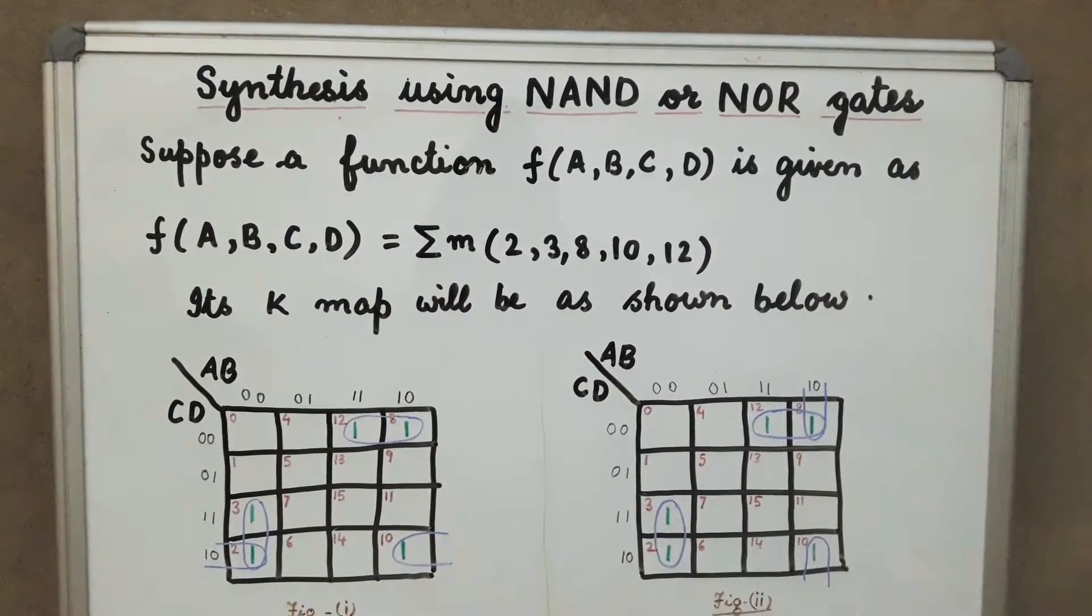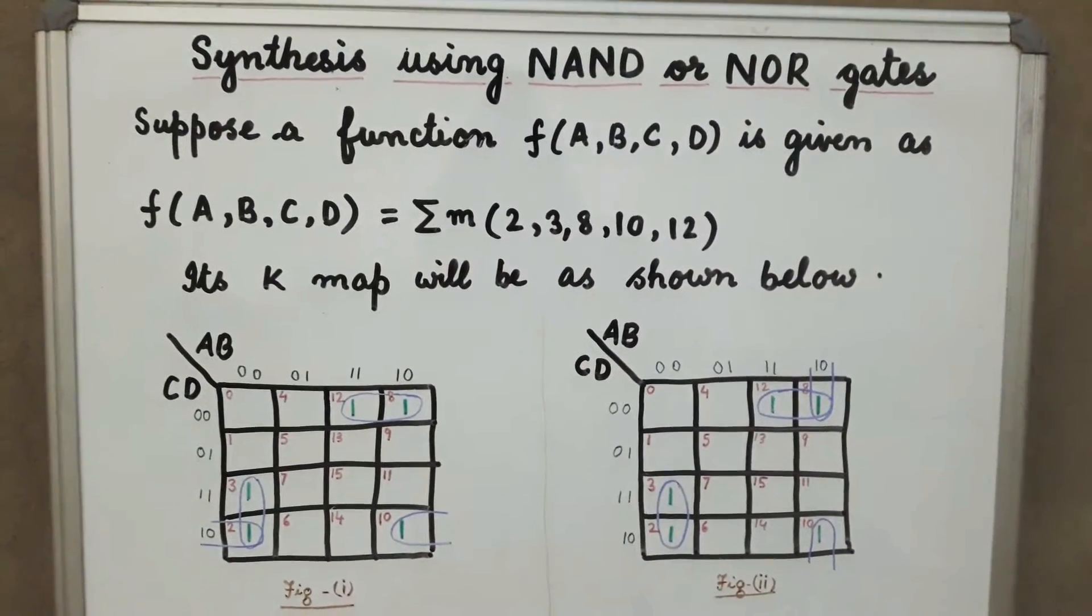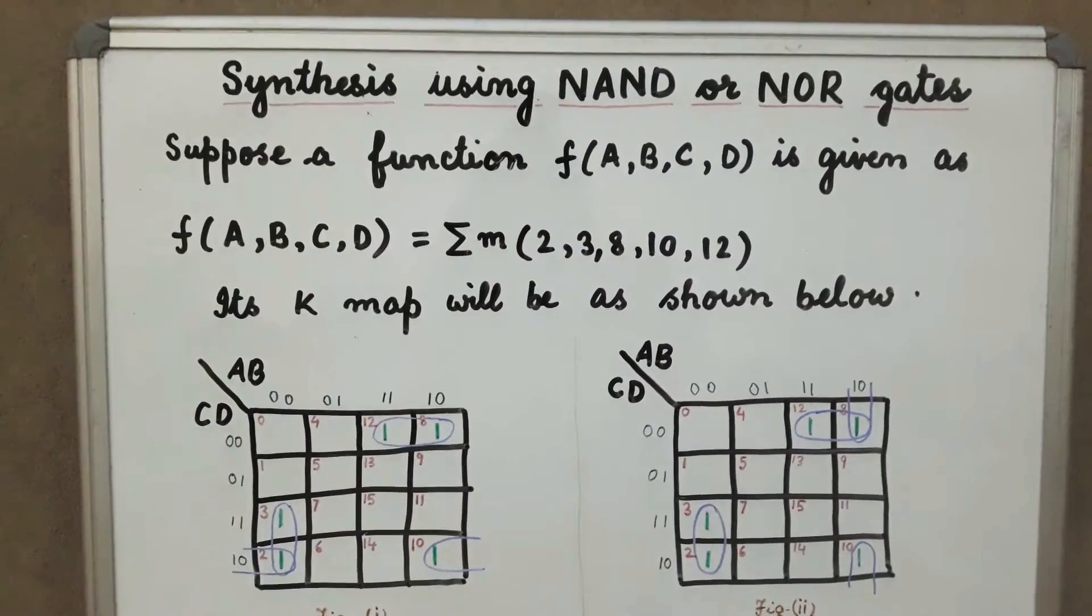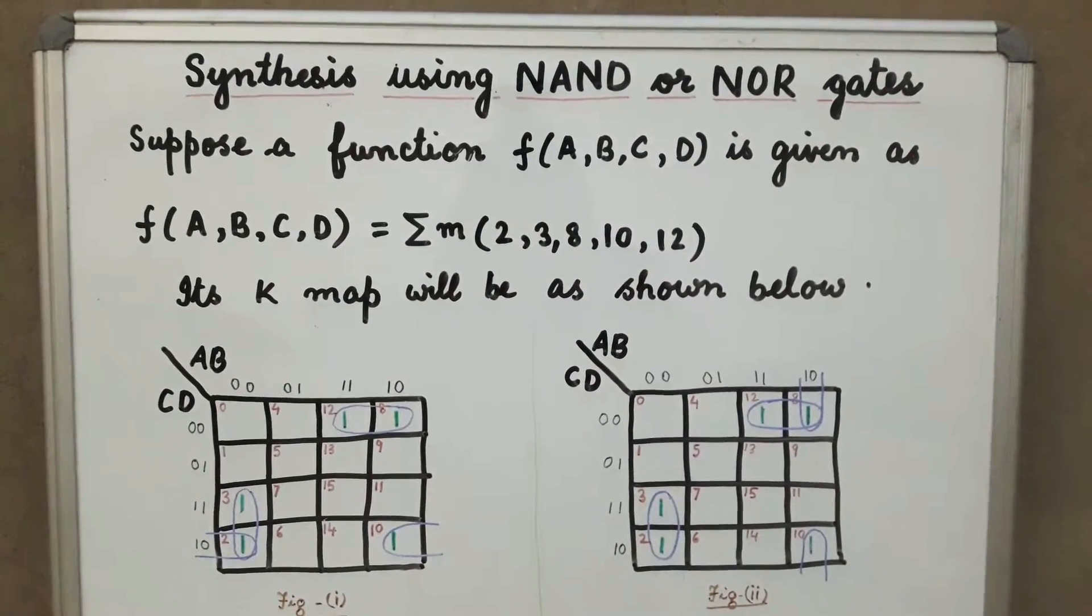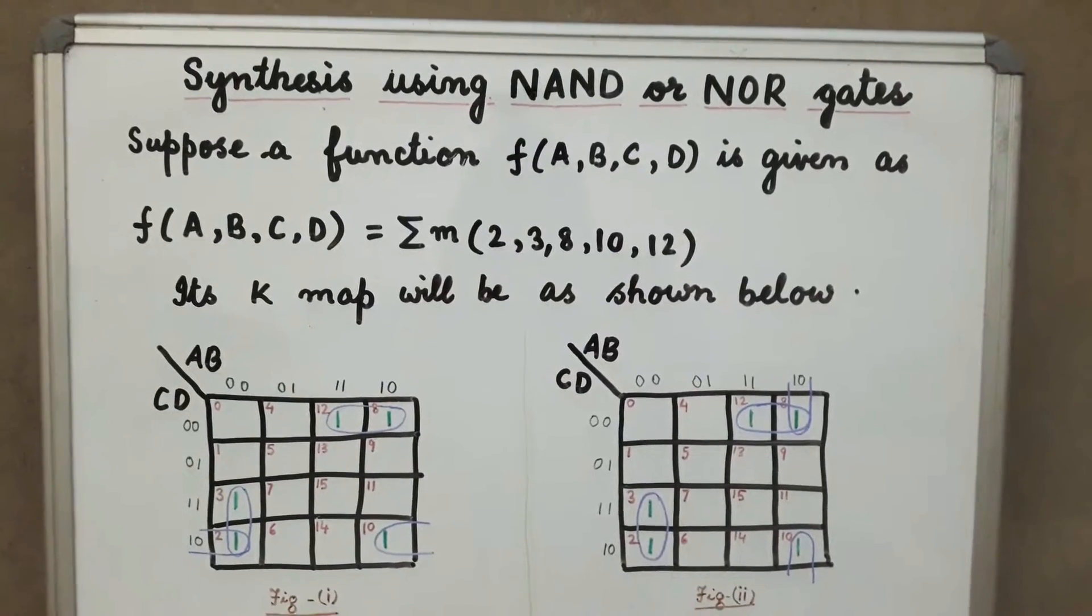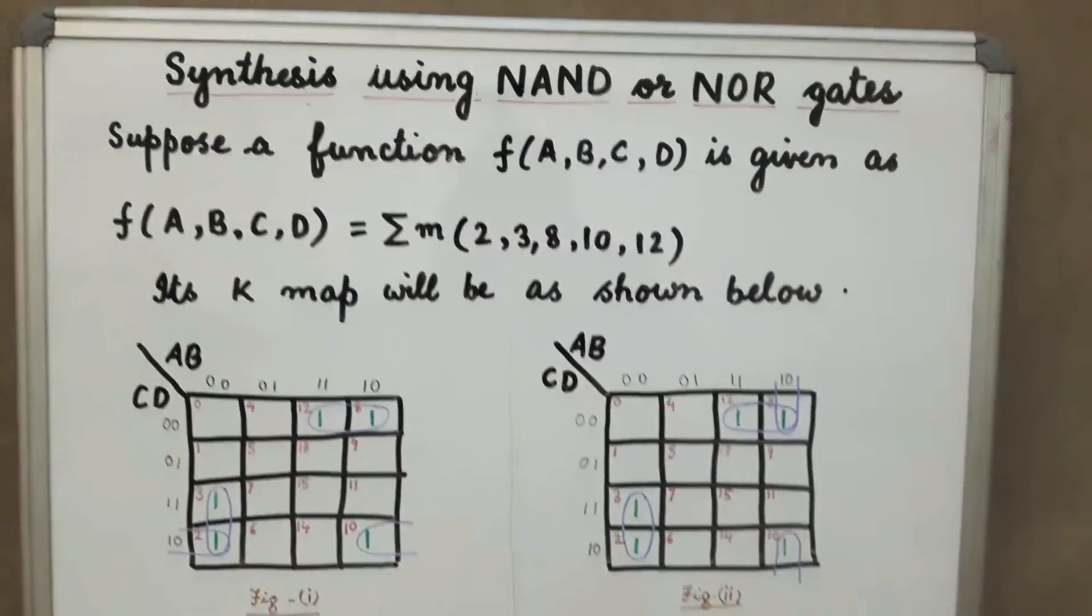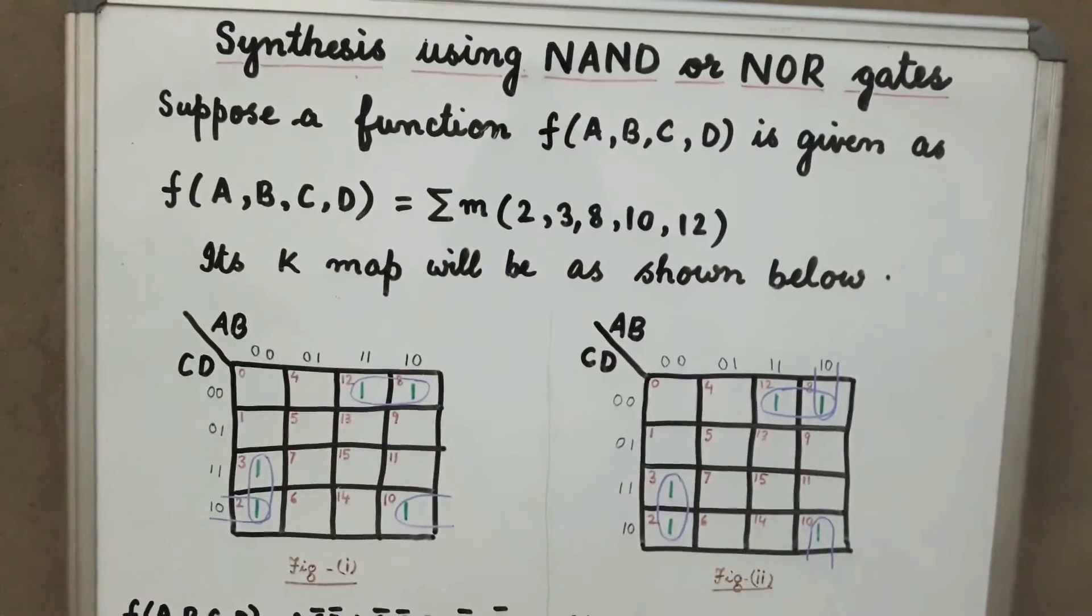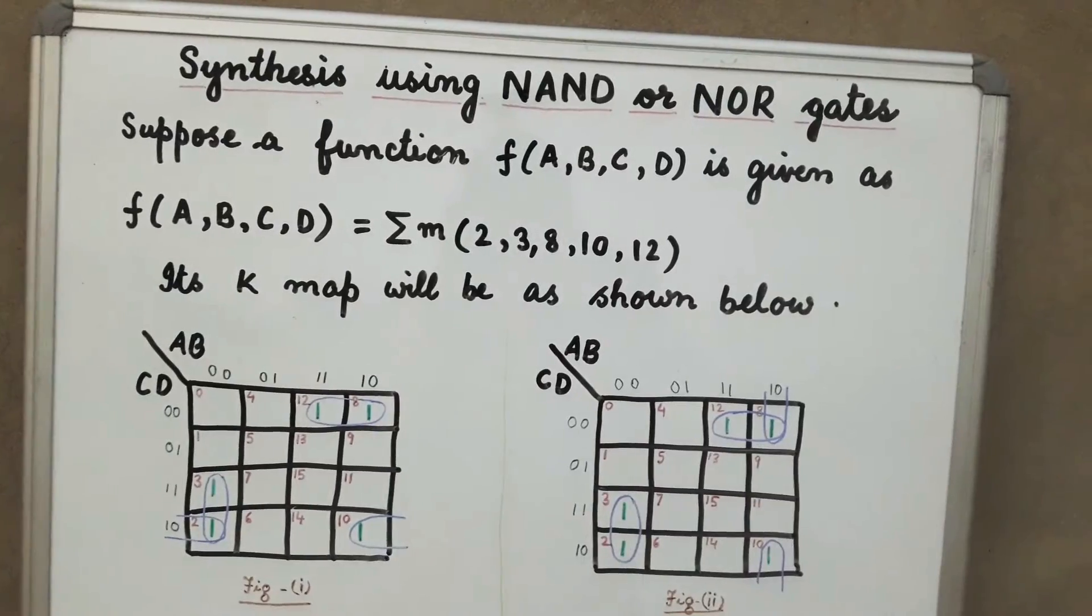Let us suppose a function of four variables F(A,B,C,D) which is given as F(A,B,C,D) equals summation of M(2,3,8,10,12). We have to find out the minimized expression of this function.